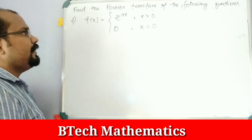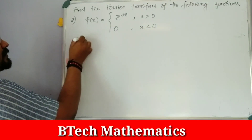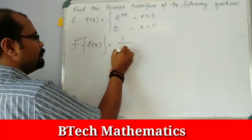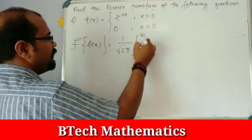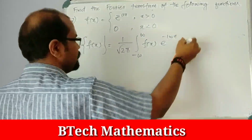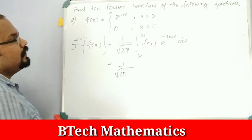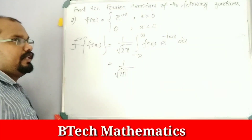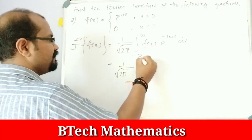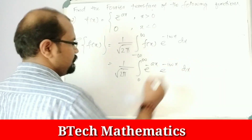Second question: f(x) = e raised to minus a·x for x > 0, and 0 for x < 0. The Fourier transform formula gives 1 over root(2π) times the integral from minus infinity to infinity of f(x) times e raised to minus i·ω·x dx. Since f(x) is zero for x < 0, the integral becomes 0 to infinity.